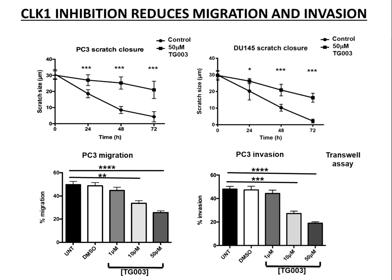We can also do migration and invasion assays in vitro to study the ability of these cancer cell lines to migrate and invade using a transwell assay and a scratch closure assay — where you create a gap between two fields of cancer cells and measure how long it takes to close. TG003 treatment, the CLK1 inhibitor, drastically reduces the ability of the cells to migrate and invade — another oncogenic feature, possibly a CLK1 function.